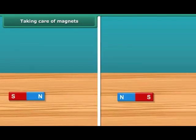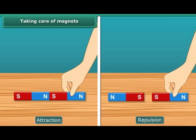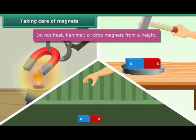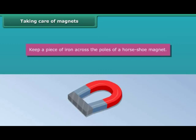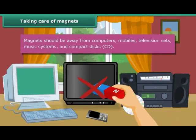To keep magnets safe and in working condition, follow these guidelines: do not heat, hammer, or drop magnets from a height, as they will lose their properties. Keep bar magnets in pairs with their opposite poles on the same side, using wood to separate them. Keep a piece of iron across the poles of a horseshoe magnet. Magnets should be kept away from computers, mobiles, televisions, music systems, and compact discs.